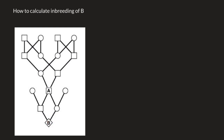So first of all, let's find how individual A is inbred. The first loop would be as follows. We are going to find how many nodes we have on this loop — one, two, three, four, and five. We are going to use the nodes method today, not passes, because it is faster. So we have one-half to the power of five for this loop, where five stands for the number of nodes.